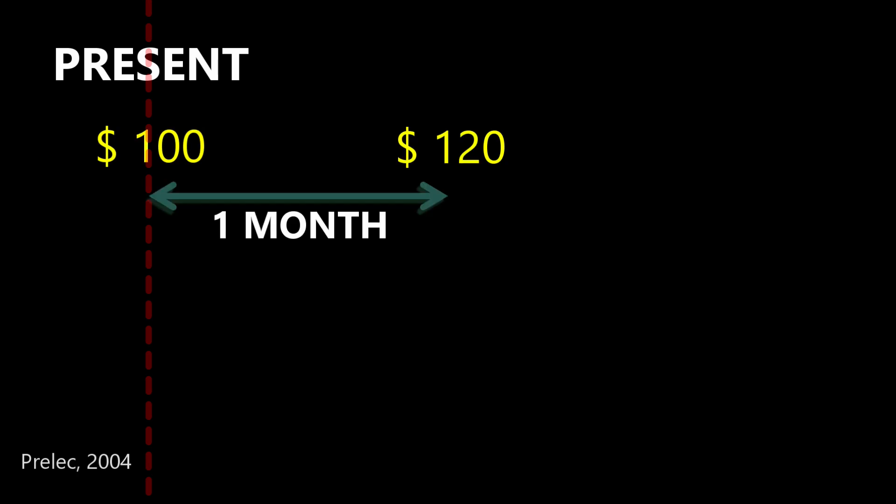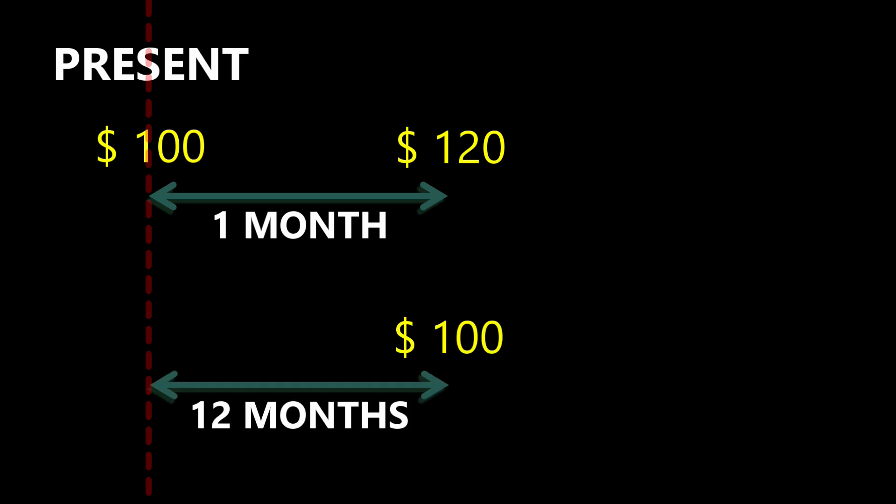Participants are given a choice to receive $100 immediately or $120 in a month. In this case, most people are likely to pick the sooner payoff of $100 and not wait an additional month for $20. But now consider a choice to receive $100 in 12 months or $120 in 13 months.